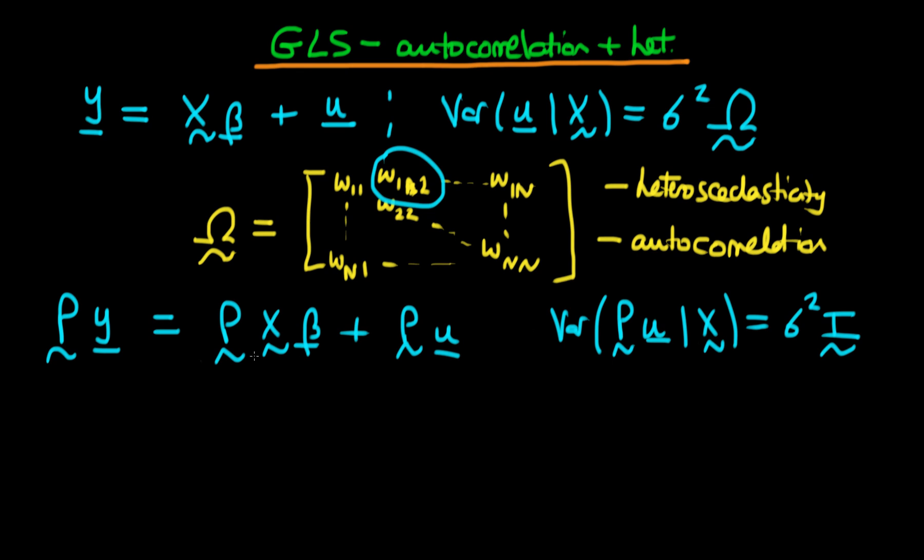So how can we do this? Well, we've already kind of done this, right? We've already evaluated the variance of P u given X. We know that it's equal to P times the expectation of u times u prime given X times P prime, where P prime represents the transpose of P. And we know already what this expectation of u u prime is—it's just sigma squared times omega.